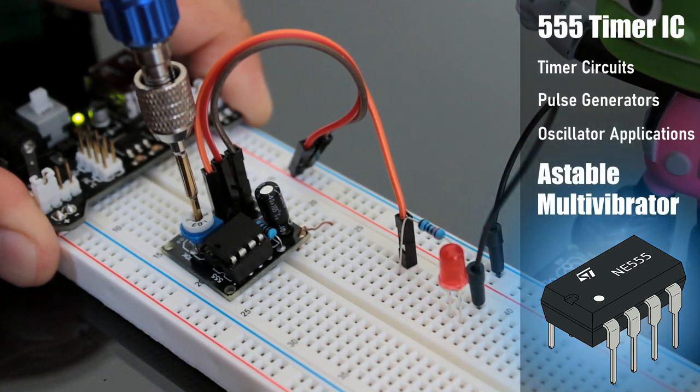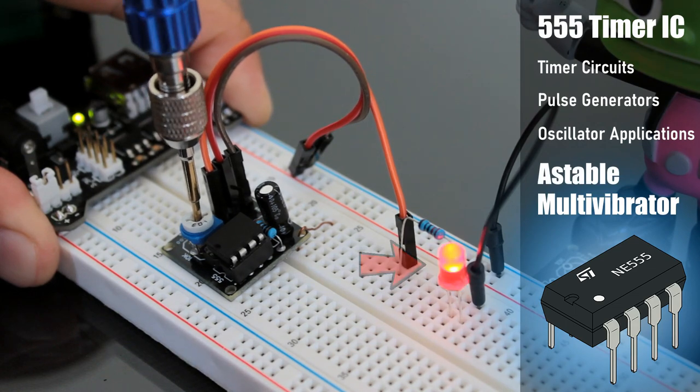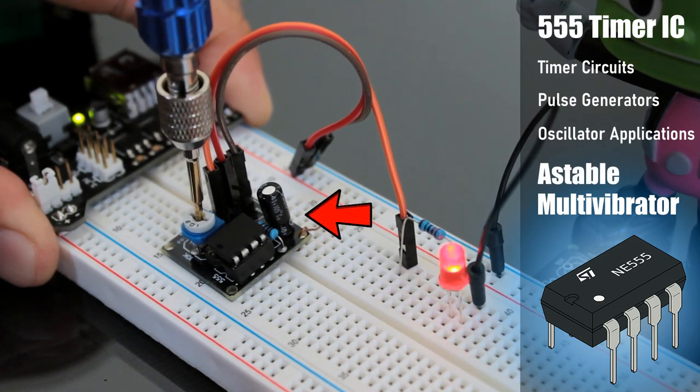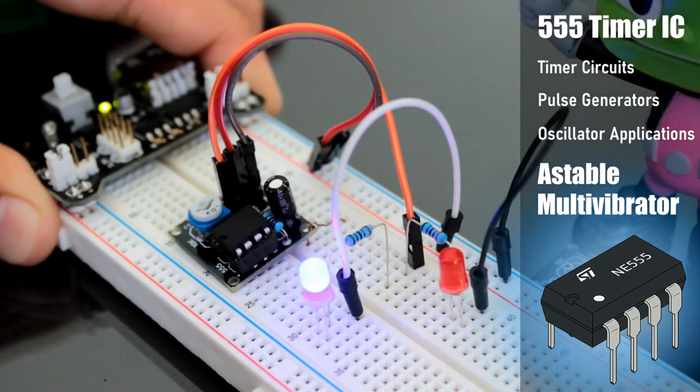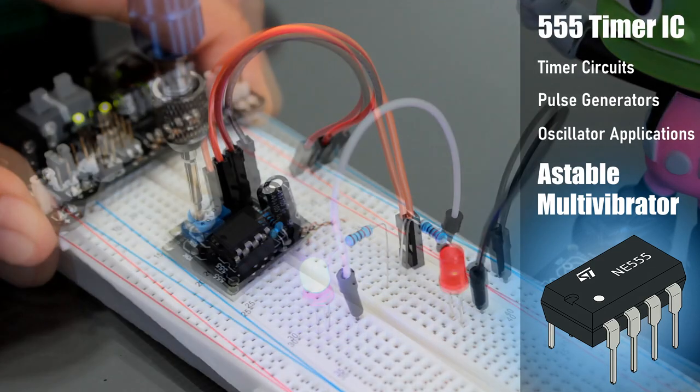In this tutorial, I'll first blink an LED using the positive pulse generated by a DIY 555 pulse generator module, followed by two LEDs alternating and flashing at a regular interval.